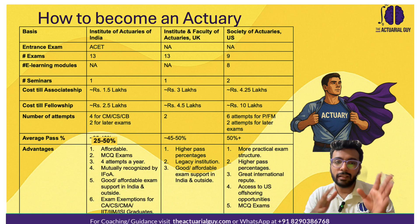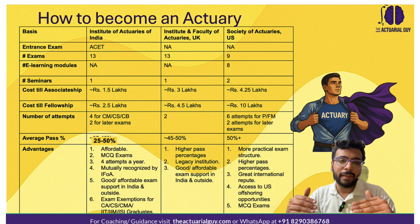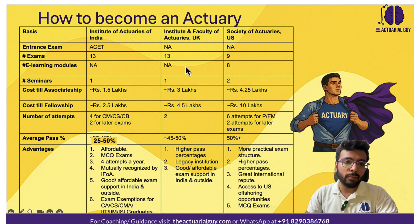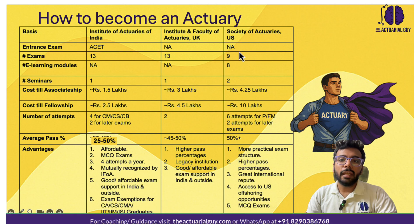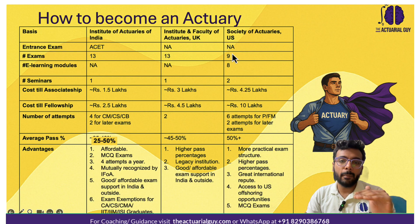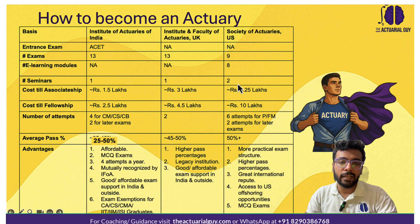Now let's talk about the advantages and disadvantages of the various institutes. For the Institute of Actuaries of India, there is a set entrance exam, and you need to write 13 more exams to qualify as a fellow actuary. For the Institute and Faculty of Actuaries UK, there are also 13 exams but no entrance exam. For the Society of Actuaries, there is no entrance exam either, but qualifying requires a blended mix of exams, e-learning modules, and seminars.